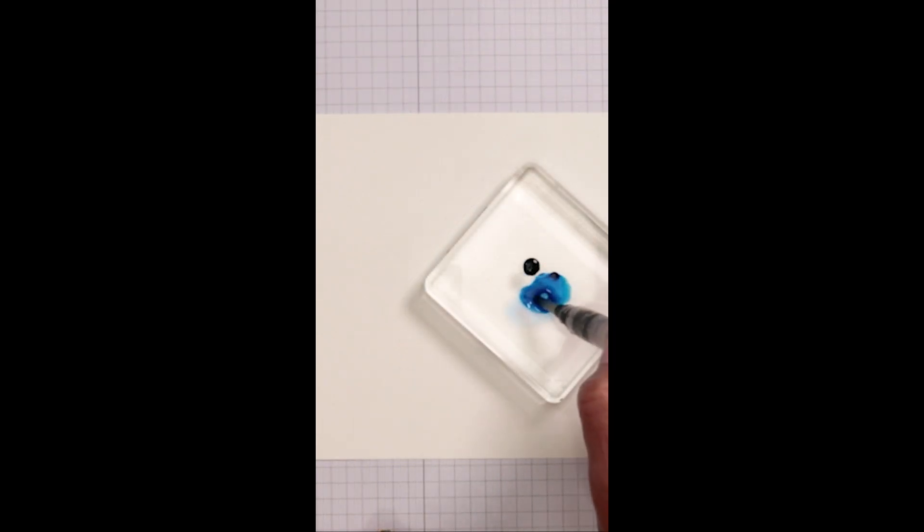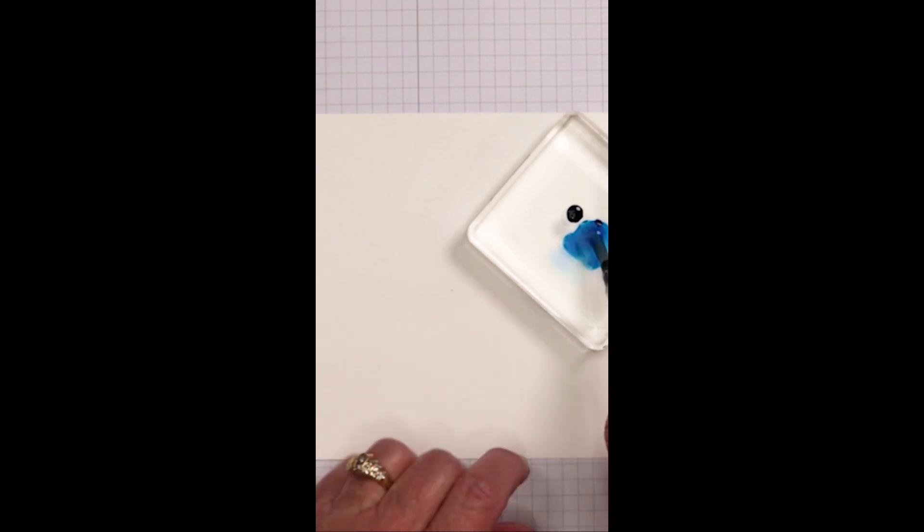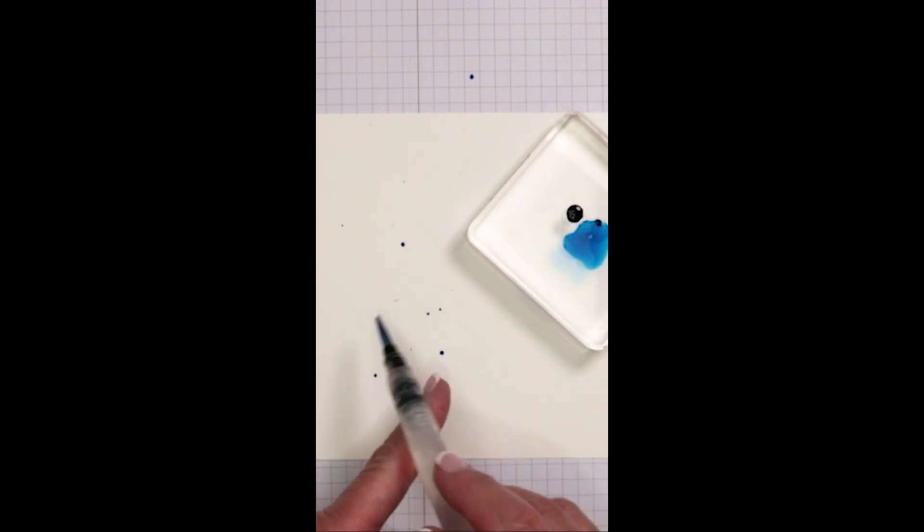You want to create this into a very thin liquid finish and then what you're going to do is splatter it on your cardstock.